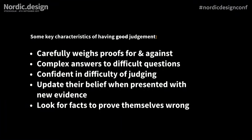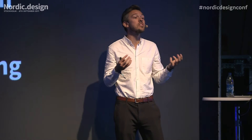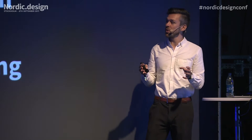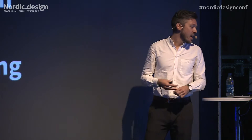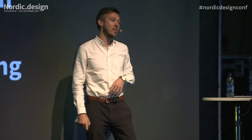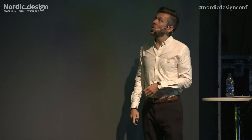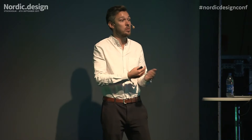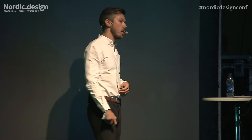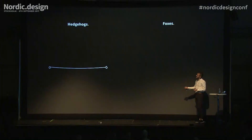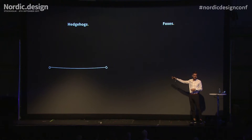They found that carefully weighing evidence for and against, giving complex answers to difficult questions — like, if you can explain why Donald Trump won the election in a single sentence, that's a simple answer to a very difficult question. The nuanced people didn't want to give simple answers; they updated their beliefs when presented with evidence and looked for facts to prove themselves wrong. They call the defensive, poor-judgment people hedgehogs, and the more nimble, flexible people foxes. A hedgehog has an idea and, even when presented with new evidence, keeps the same idea. That's dogmatism. A fox, like design iteration, evolves over time.